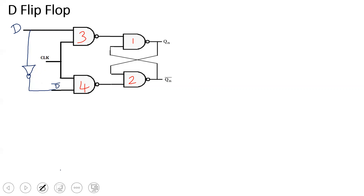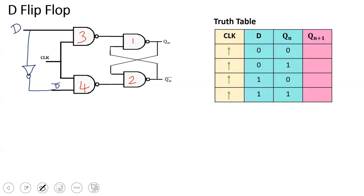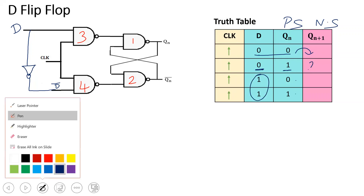The working is shown in the truth table. From the truth table, I can get the D input. Qn represents the present state, and Qn+1 is the next state. When input D is 0 and Qn is 0, the next state is 0. When Qn is 1 and D is 0, the next state is also 0. Similarly for D=1, the next state is 1.